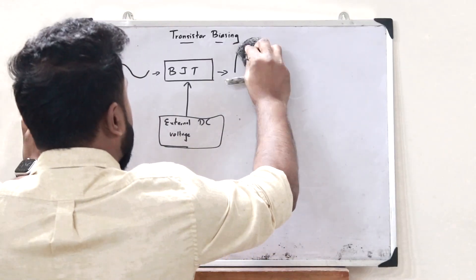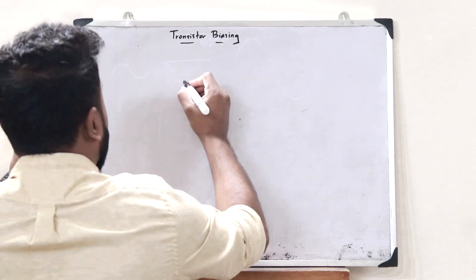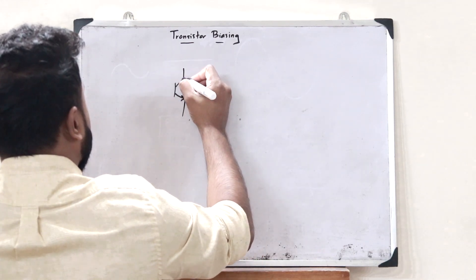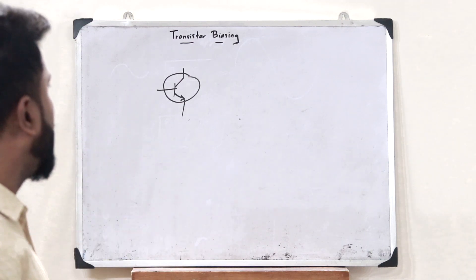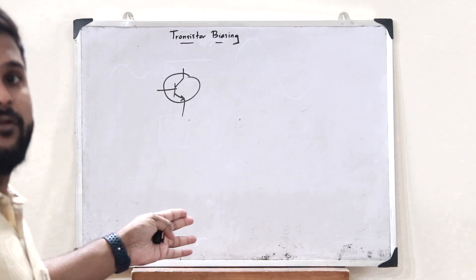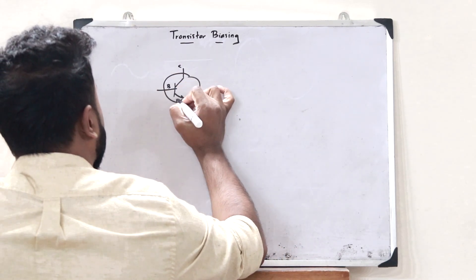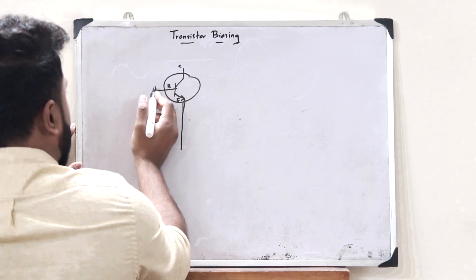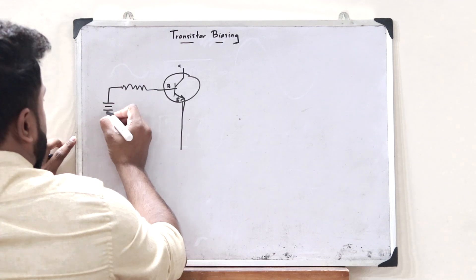Let us now take a particular bipolar junction transistor in the common emitter configuration. Here, this is the collector, this is the base, and this is the emitter. Let us take the emitter as common. Then what we observe is that here, we give the input voltage VBB.